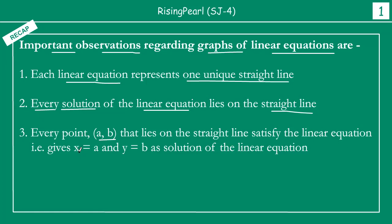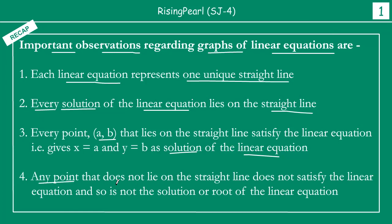So, x equals a and y equals b being a solution means that every solution of a linear equation lies on the straight line. Conversely, every point that lies on the straight line is actually a solution of the linear equation — if we have a random point (a, b) on the line, it will satisfy the equation. And any point that does not lie on the straight line does not satisfy the linear equation, so it is not a solution or root of the linear equation.